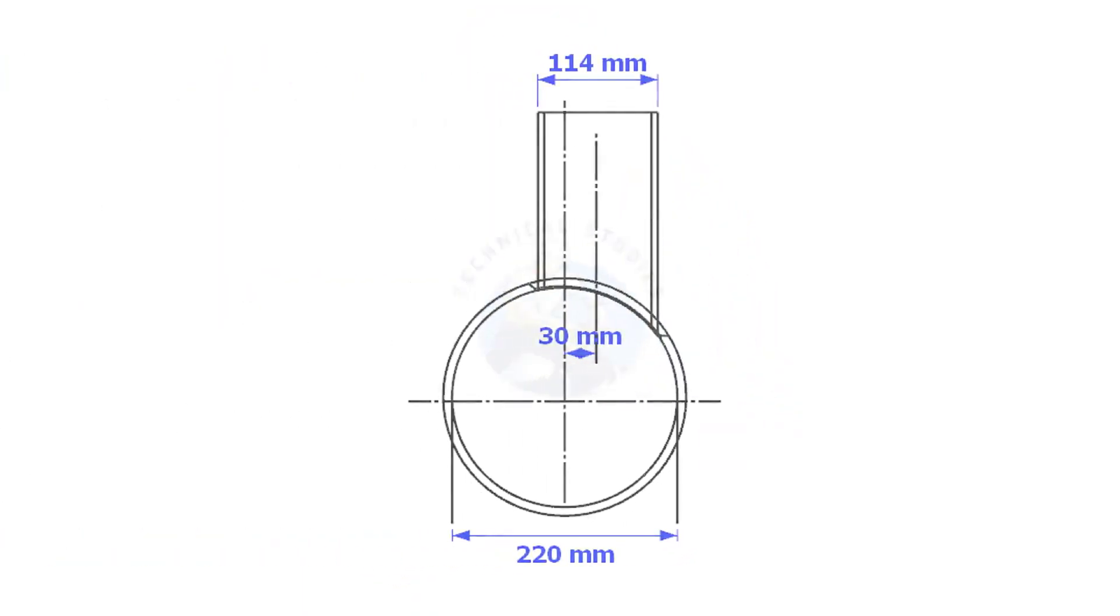Always consider the inside diameter of the header when you want to lay out the branch. Here, the header ID is 220 mm, the branch OD is 114 mm, and the offset is 13 mm.